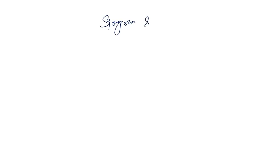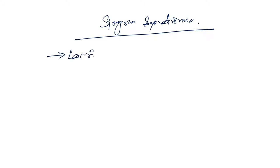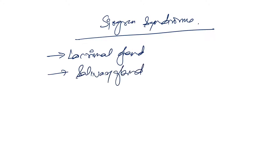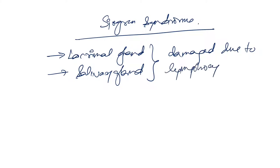In this video we'll be talking about some autoimmune disorders. First we'll start with Sjögren's syndrome. In Sjögren's syndrome, the lacrimal gland and the salivary gland are affected. They are damaged due to lymphocytic infiltration — there is lymphocytic infiltration in and around the glands.